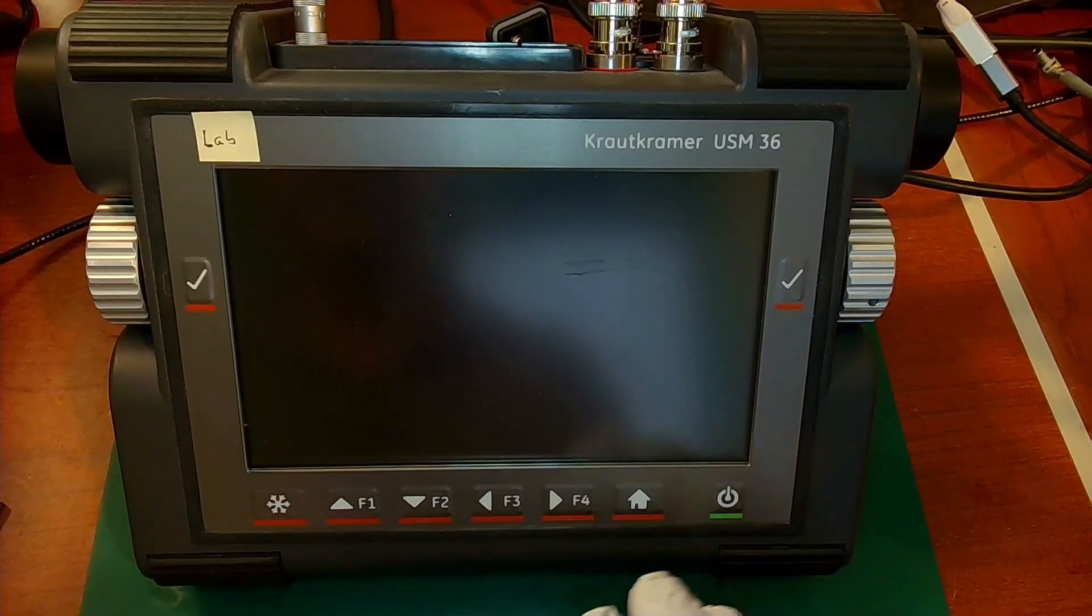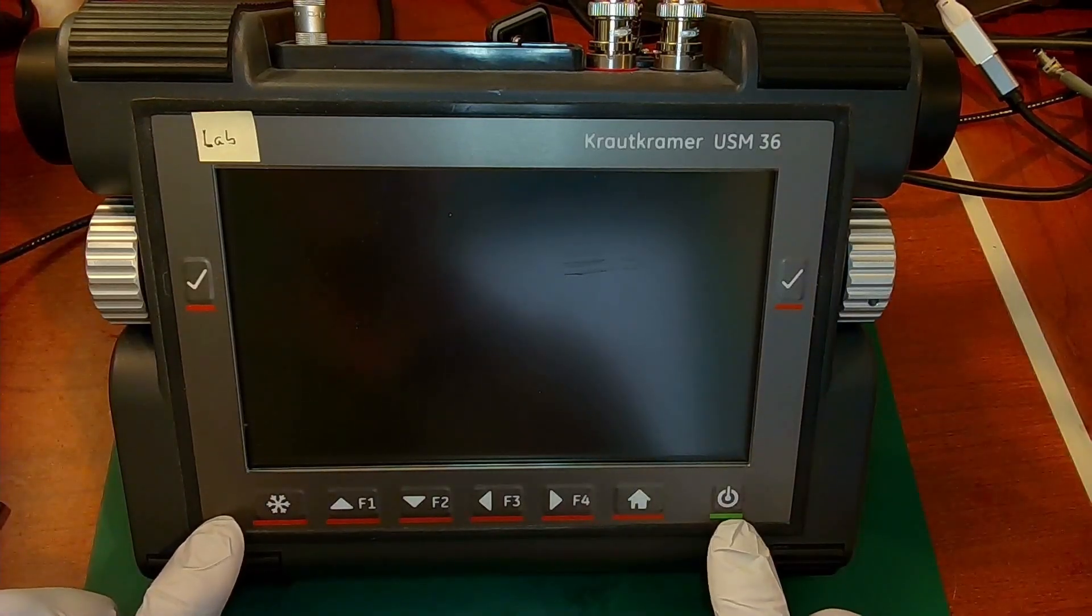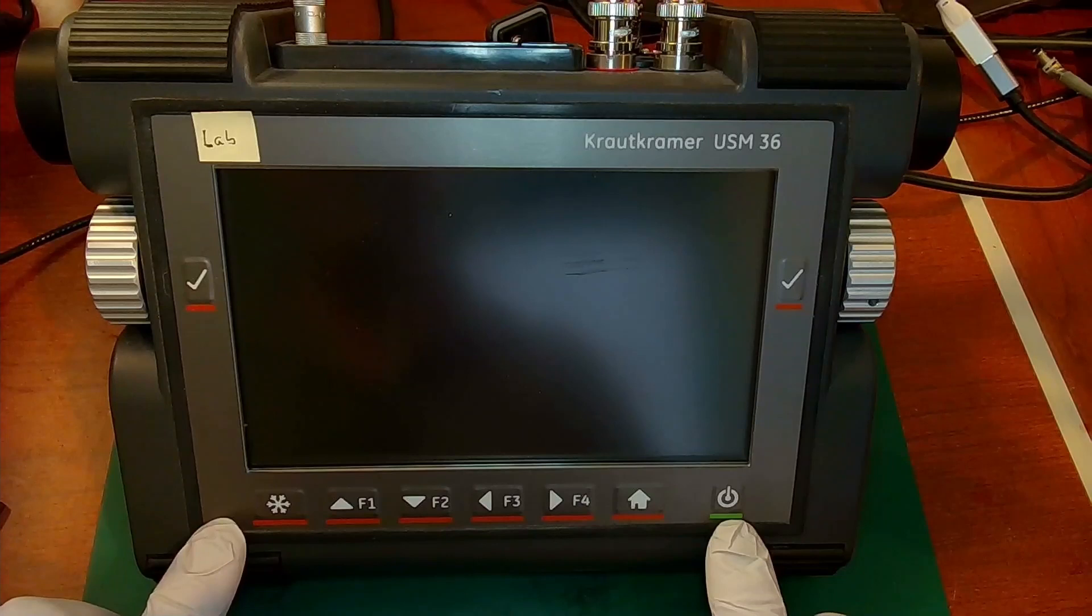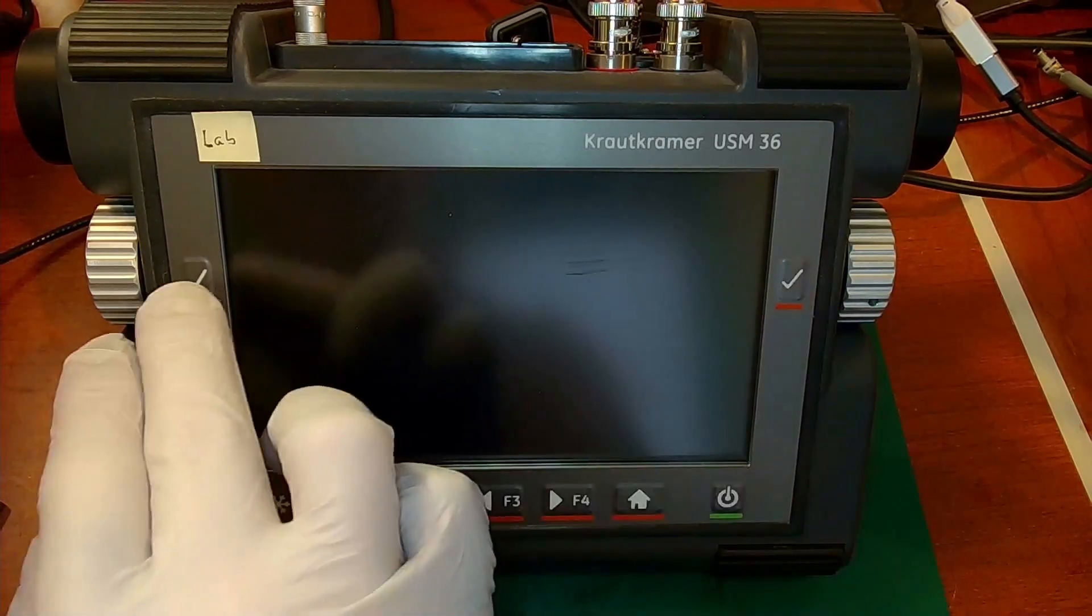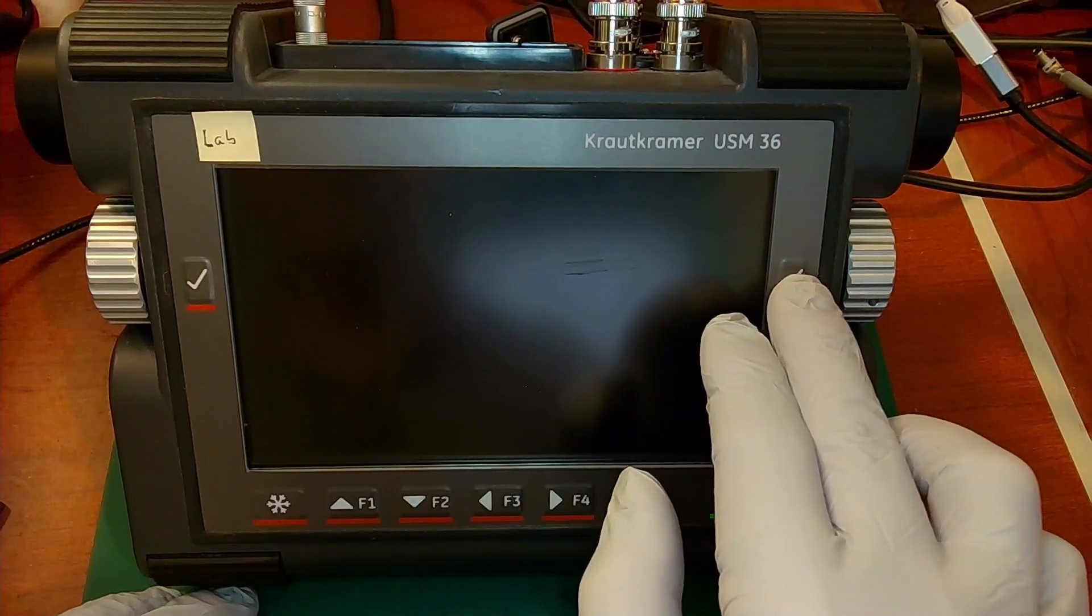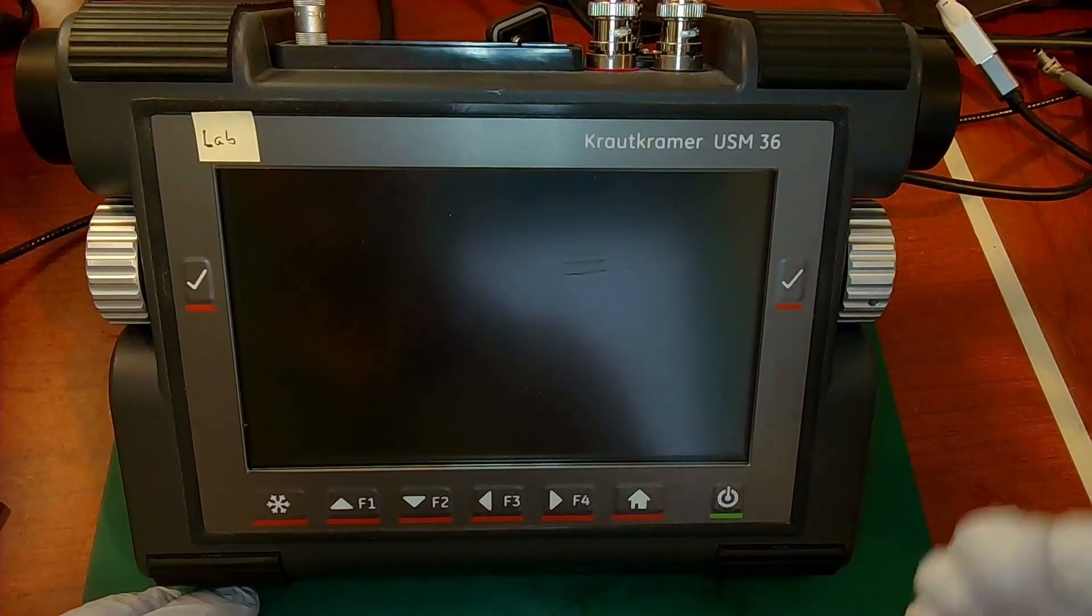So to get started there are two knobs and a collection of buttons on the front face of the instrument that are used to control the instrument. The check buttons on each side both do the same thing. They both are used to go in and out of menus.